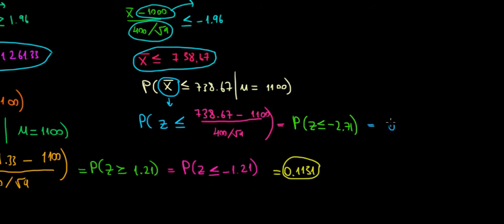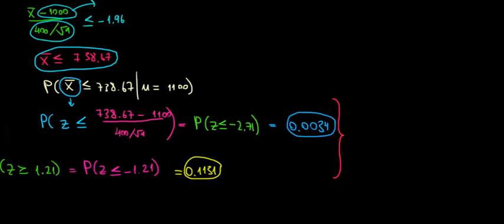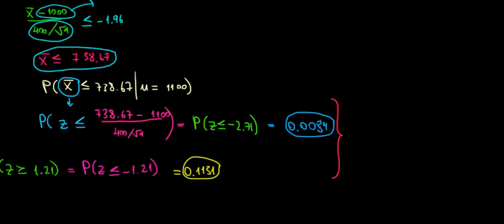This is already a value less than a number, so it's given in the distribution directly. That probability is equal to 0.0034. So we found one more piece. The entire power of the test is the sum of these two probabilities that we just found.